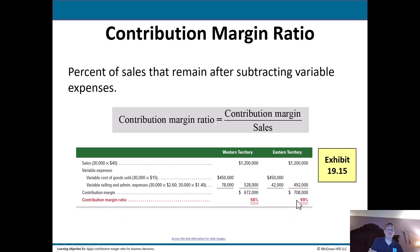The contribution margin ratio is the percent of sales that remain after subtracting variable expenses — simply contribution margin divided by sales. For example, contribution margin of $672,000 divided by $1.2 million in sales gives 56%. For the Eastern Territory, $708,000 divided by $1.2 million gives a slightly better contribution margin ratio of 59%.